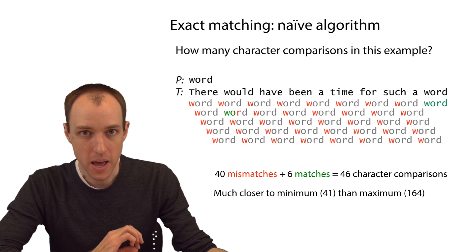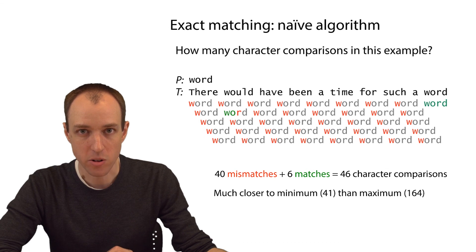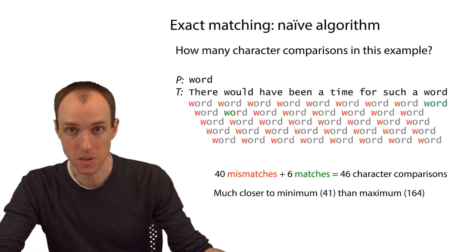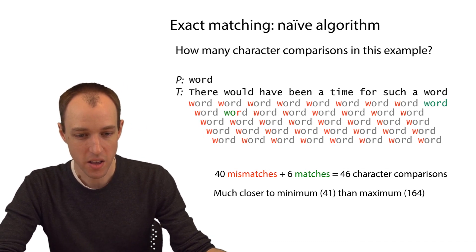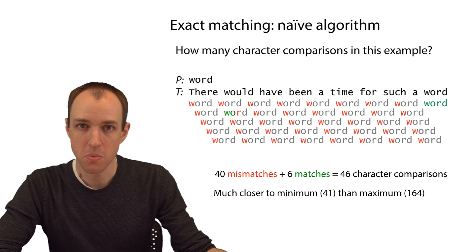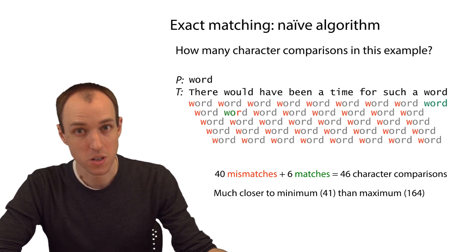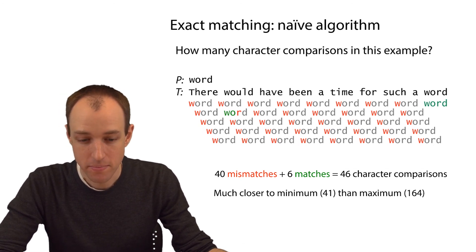We can also write down the minimum and the maximum possible number of character comparisons, given the length of the pattern and the length of the text. The minimum is 41, the maximum is 164. And so one thing that you'll notice about the number of character comparisons we do is that it's much closer to the minimum than it is to the maximum. So one positive thing that we can say about this algorithm is that in practice, or at least in this example, but it's true for many other examples too, the number of character comparisons that we do is a lot closer to the minimum than it is to the maximum.